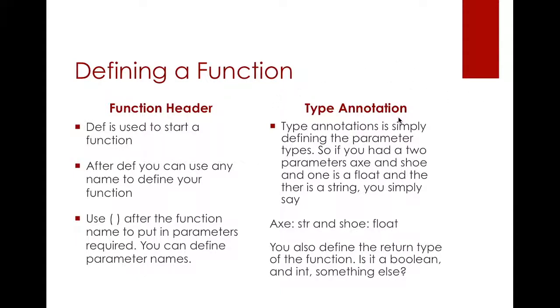Parameters are basically like inputs to give your program instructions. There's something called type annotation and it's simply defining the parameter types. It's not necessary to do it in Python but it gives other computer scientists an idea of how your function works. Let's say I have two parameters which are x and y. They're just random names. So x is a string and y is a float. I use a colon to define the type of x. This gives a chance for other computer scientists to understand what exactly are your parameters. Then lastly you have the return type of the function. So you can say is it a boolean, is it an integer, or something else.